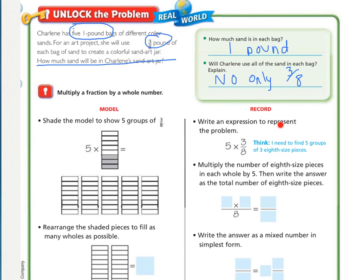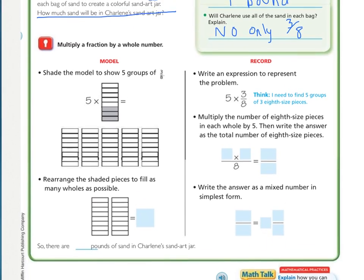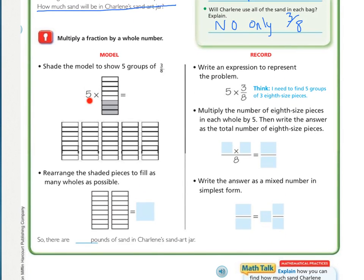The record part is going to be the algorithm that we'll actually just be using. This model is to show you how the algorithm works. So right here, we have 5 times 3/8. That's what that picture is. So we need to find 5 groups of 3/8 size pieces, and that's what they did right here. There's 5 with 3/8. So on each of these rectangles, fill in 3 of the 8 pieces. So I shaded in 3 of each 8 piece.